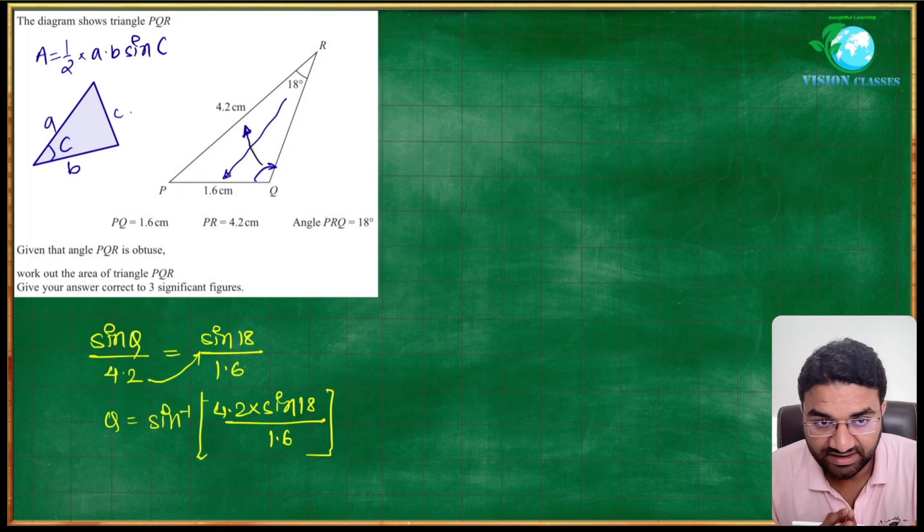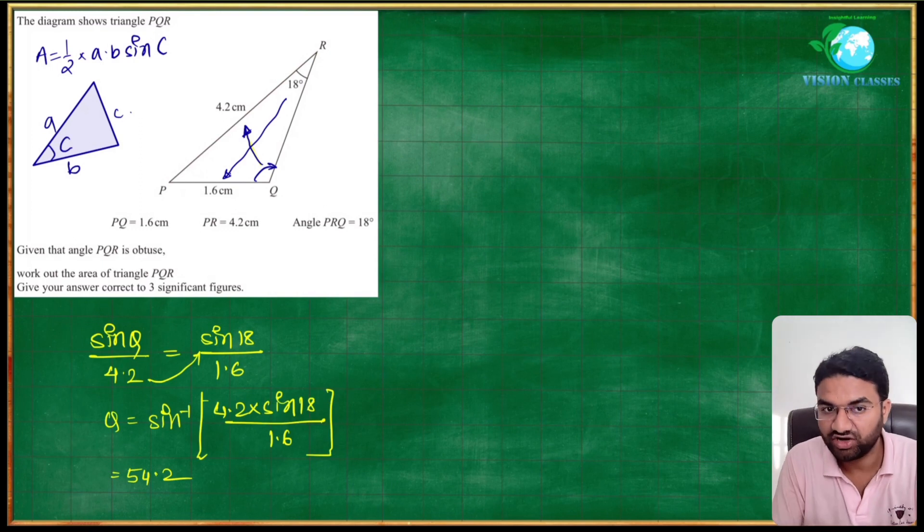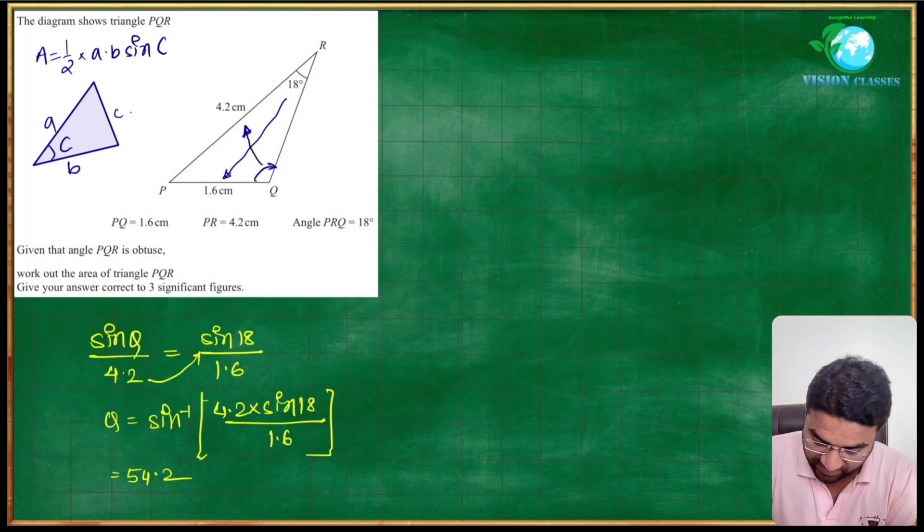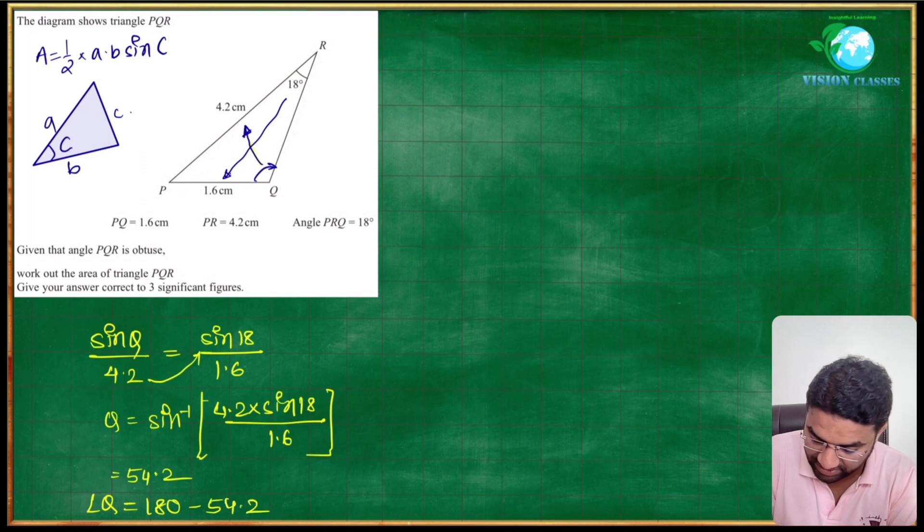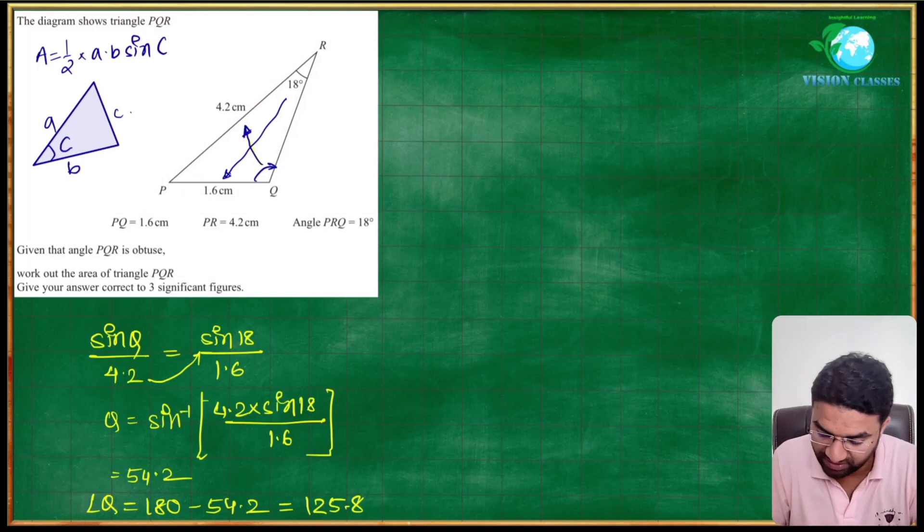The sine value of angle Q we will get is 54.2, but this is not an obtuse angle. This is an acute angle we are getting here. To find the obtuse angle Q, we have to subtract 180 minus 54.2, which equals 125.8 degrees.